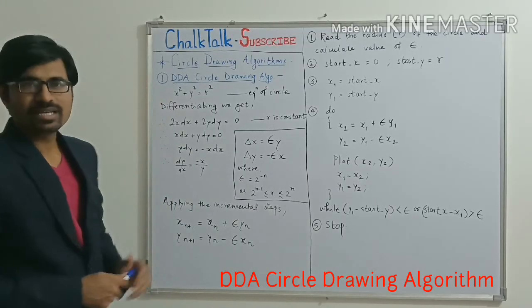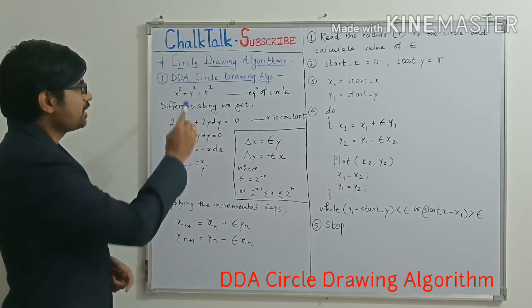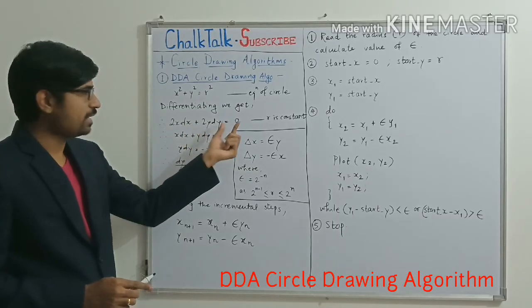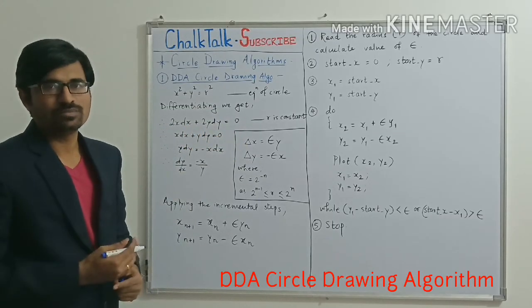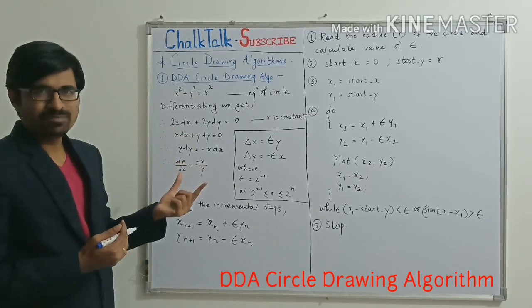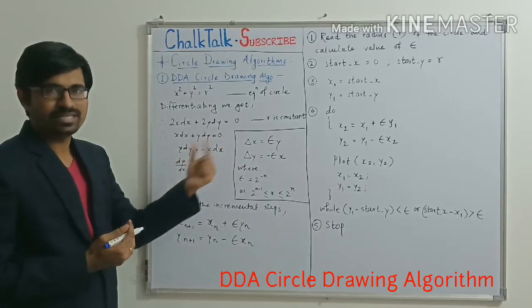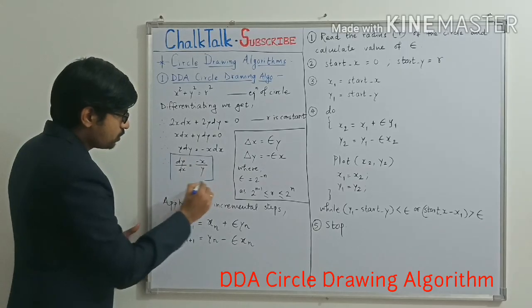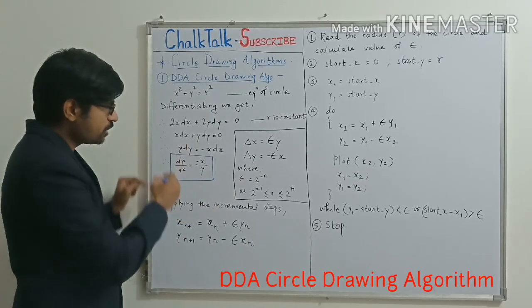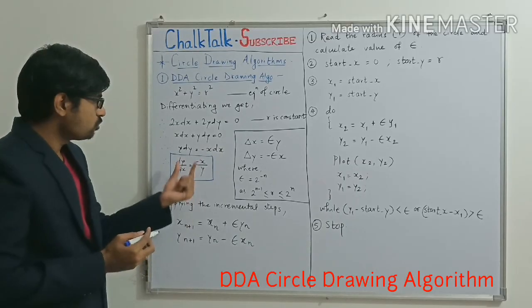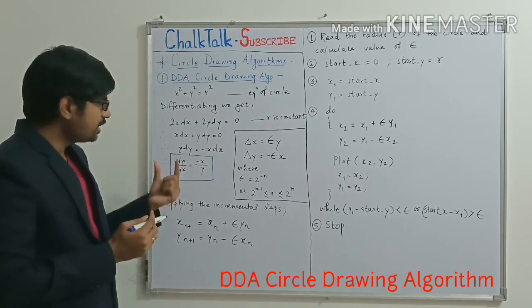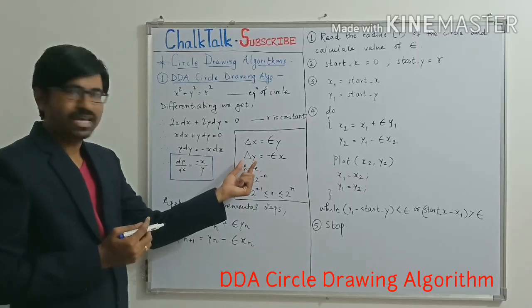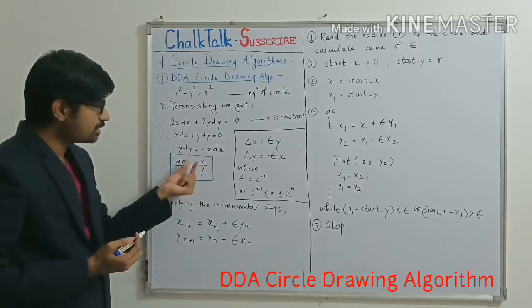So the equation of the circle consideration will be x² + y² = r². And considering this equation, we will be differentiating it and we get 2x dx + 2y dy = 0, where my r which is the radius of the circle is constant. So having some simplification to this, we got x dx + y dy = 0. And then according to that, we got this equation dy/dx = -x/y. Just by substituting left-hand side term to the right-hand side term. So -x/y will give me the idea that the incremental factor in terms of dx will be epsilon y, and incremental factor in terms of del y will be -epsilon x. So this minus sign comes from this equation.